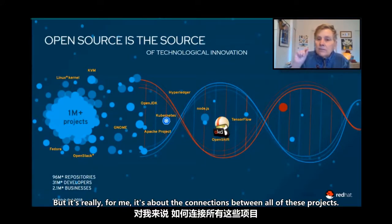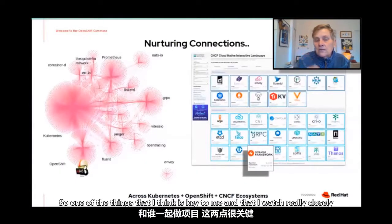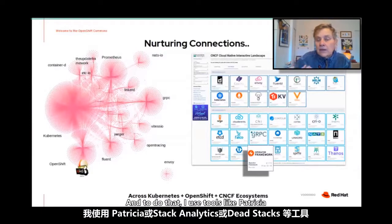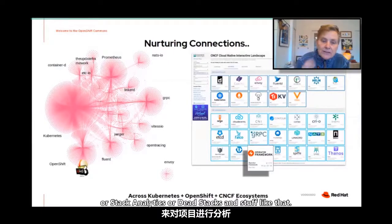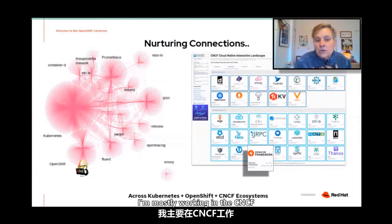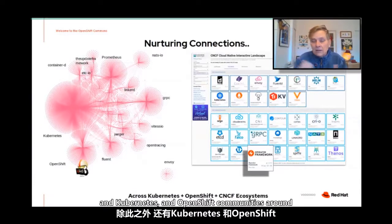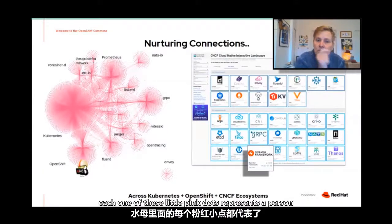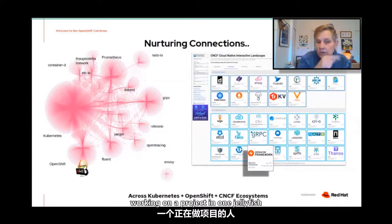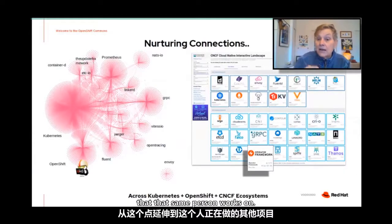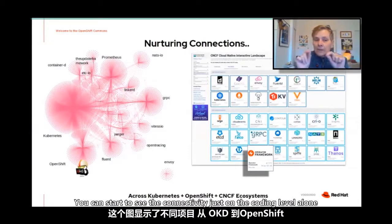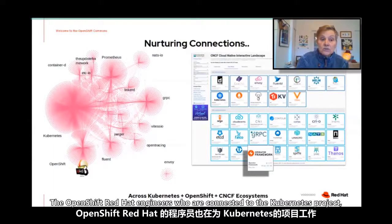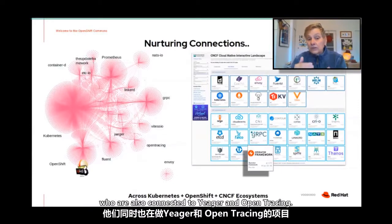For me, it's really about the connections between all of these projects. One of the things I watch really closely is how projects are connected and who's working on them. To do that, I use tools like Vitergia, Stack Analytics, or DevStacks. Looking at this jellyfish diagram, I mostly work in the CNCF, Kubernetes, OpenShift, Linux, and Fedora communities. Each one of these little pink dots represents a person working on a project, with lines going out to other projects that same person works on.